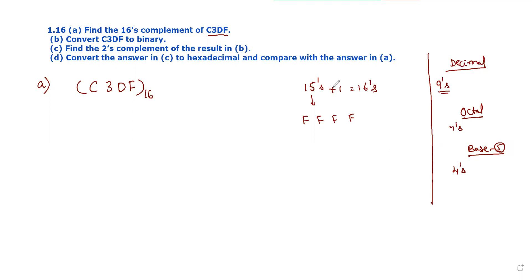For the hexadecimal number, 15's equivalent — each hexadecimal digit, subtract from F to get the 15's complement. From the 15's complement, add 1 to get the 16's complement. So for the 15's complement, subtract each hexadecimal digit from F.